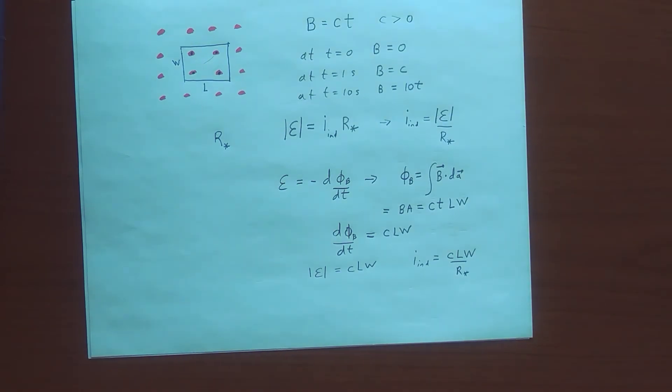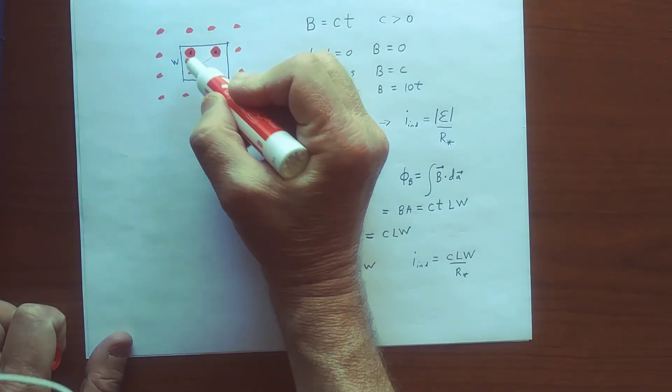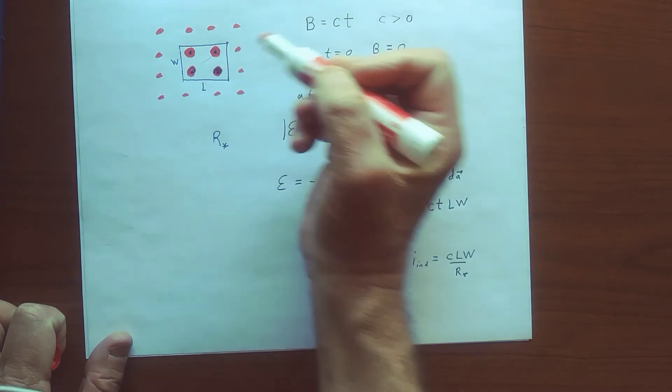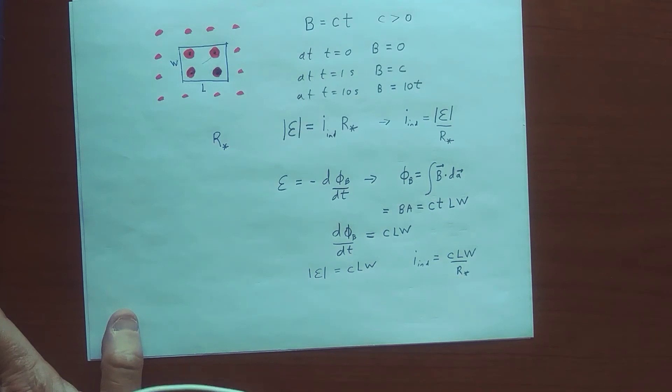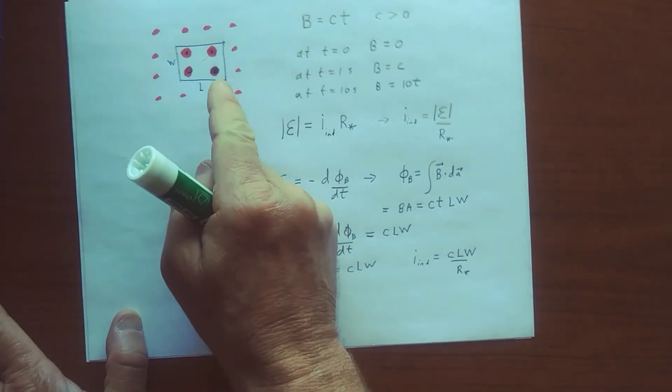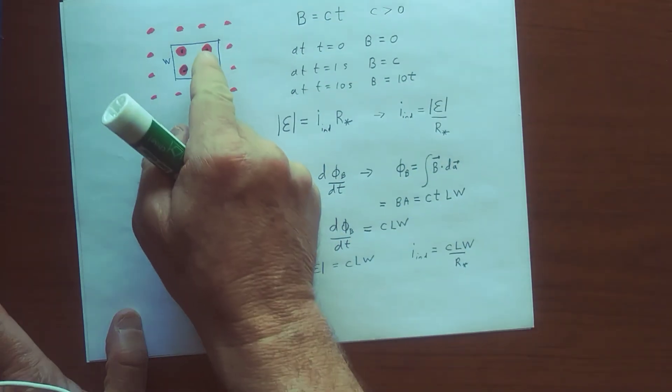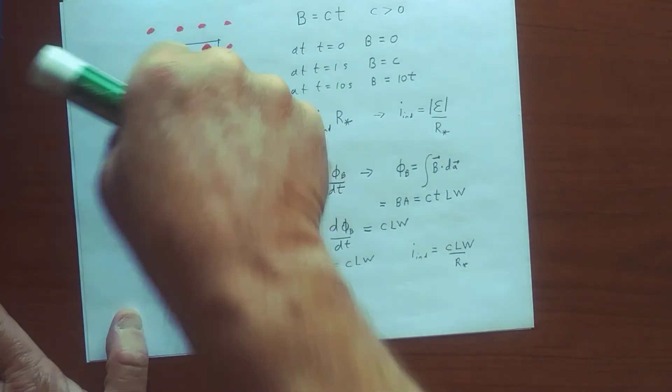we can make these red dots bigger and bigger, then we know that the induced current will flow in this loop such that the field that's associated with the induced current in this region is pointing into the page.